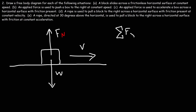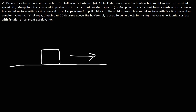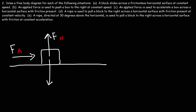Now let's move on to part B. We have an applied force used to push the box to the right at constant speed. So this is going to be the applied force. We still have a normal force and the weight force. The box is moving at constant speed, so the acceleration is zero.